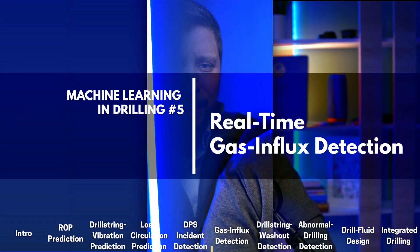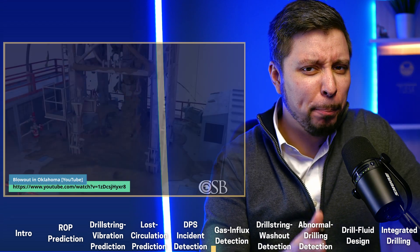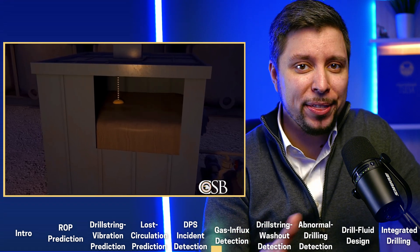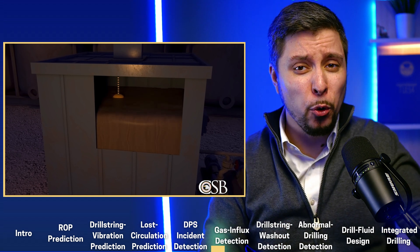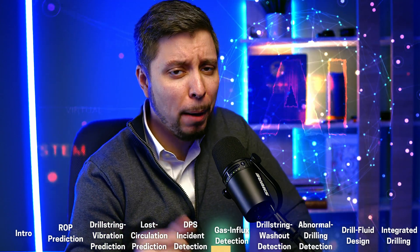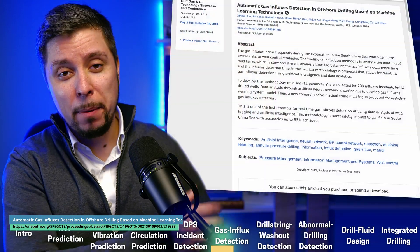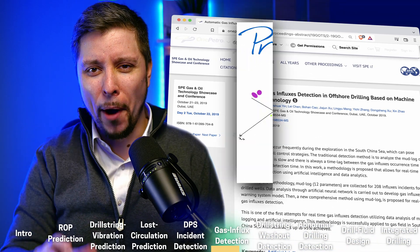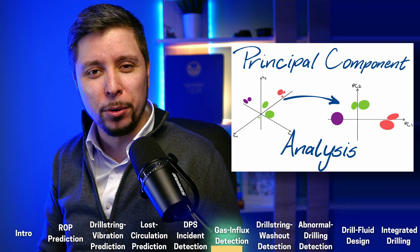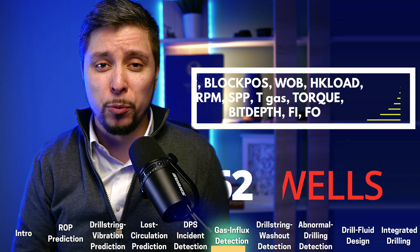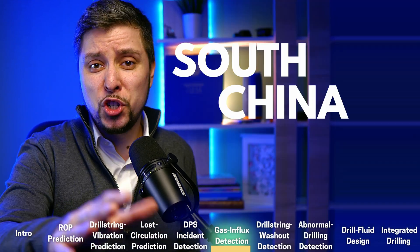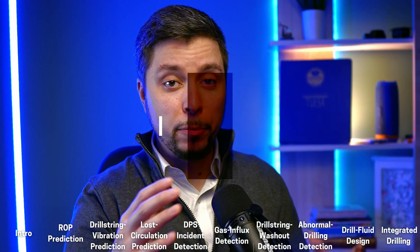Real-time gas influx detection: gas influxes are widespread in deep-water drilling and pose serious threats to well control strategies. Standard detection methods evaluating mud logs and mud tanks are slow and entail a time lag between the occurrence and detection. In a paper by Huo published in 2019, the authors used neural networks for real-time detection of gas kicks while using PCA to reduce dimensionality. Mud logs with 12 parameters were collected for 62 wells, and the methodology achieved accuracy up to 95% when applied to gas fields in the South China Sea.